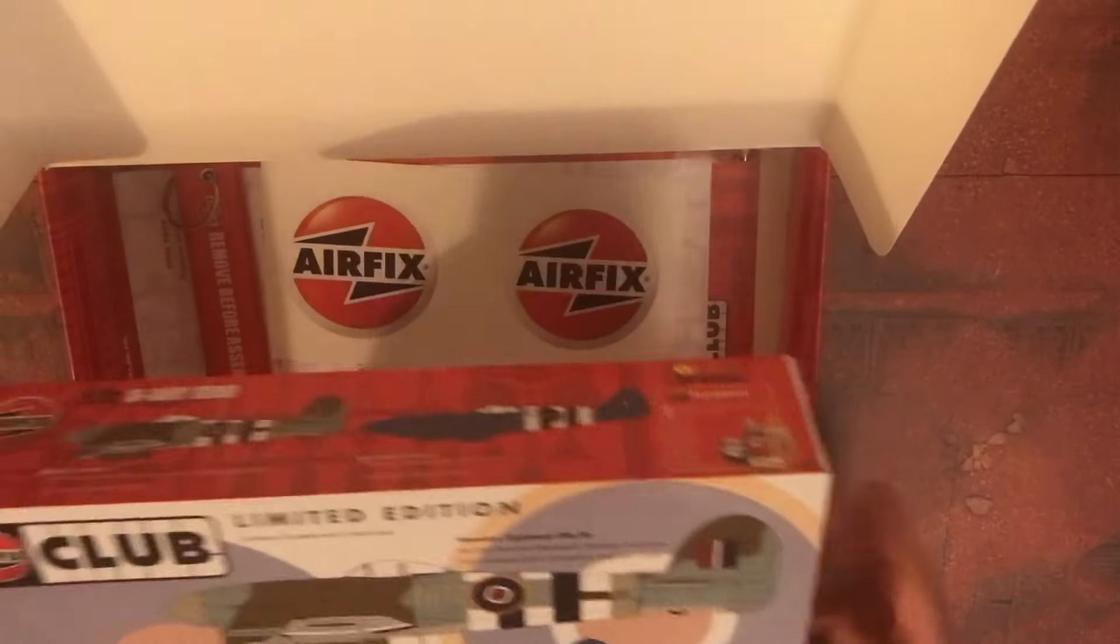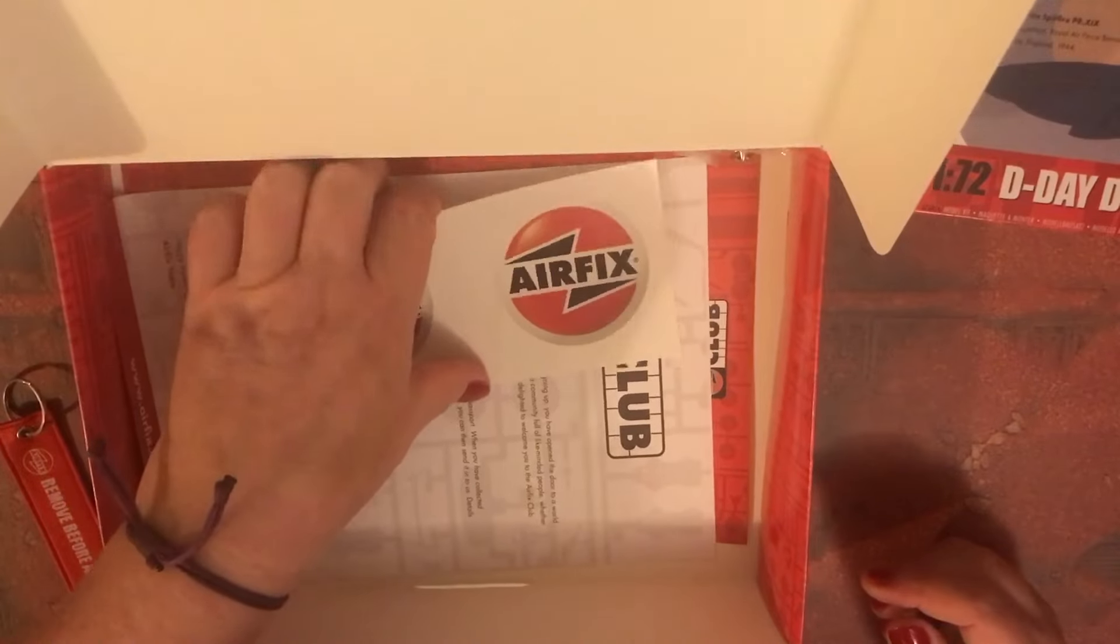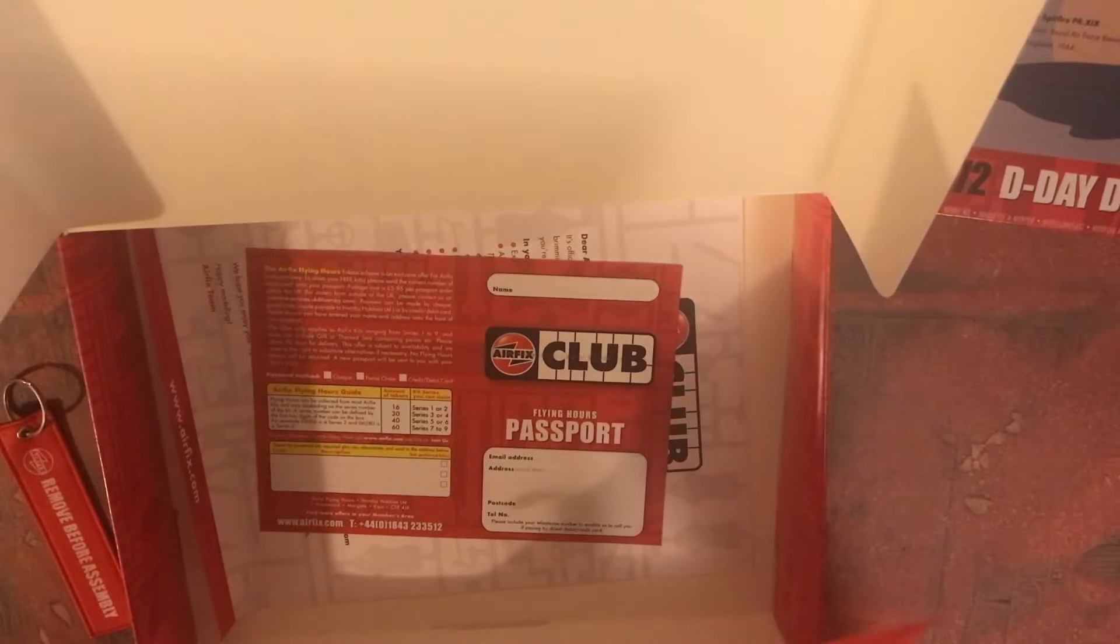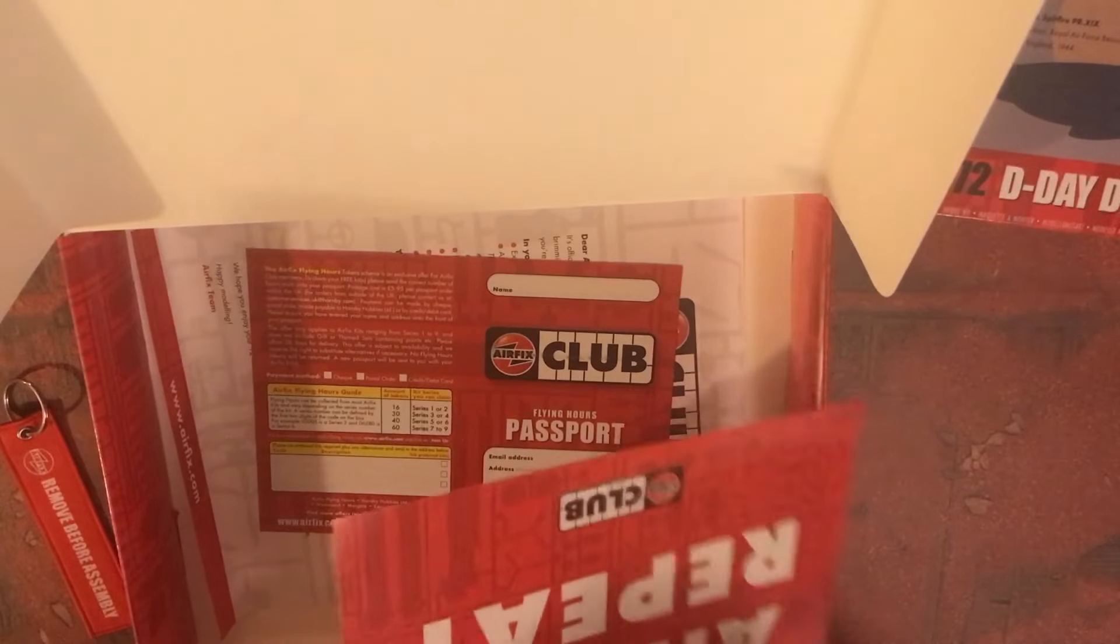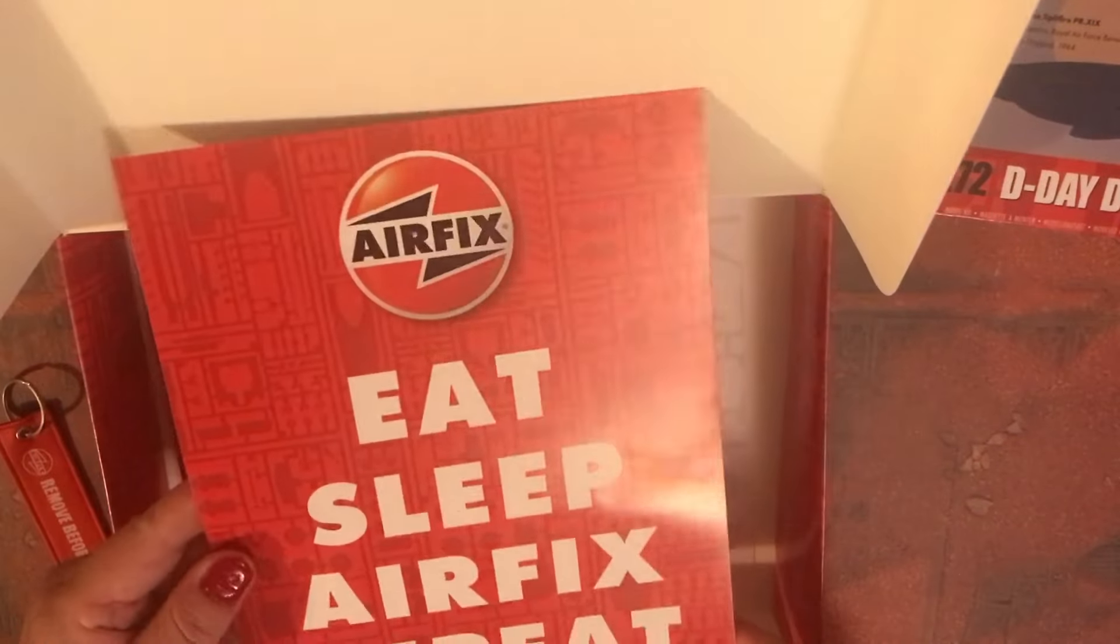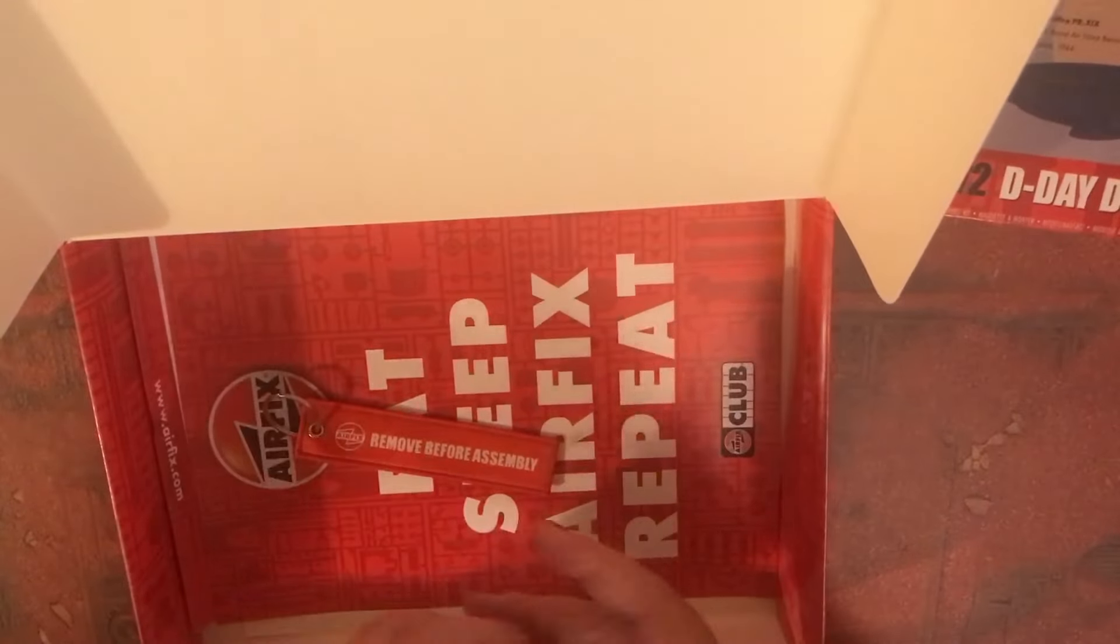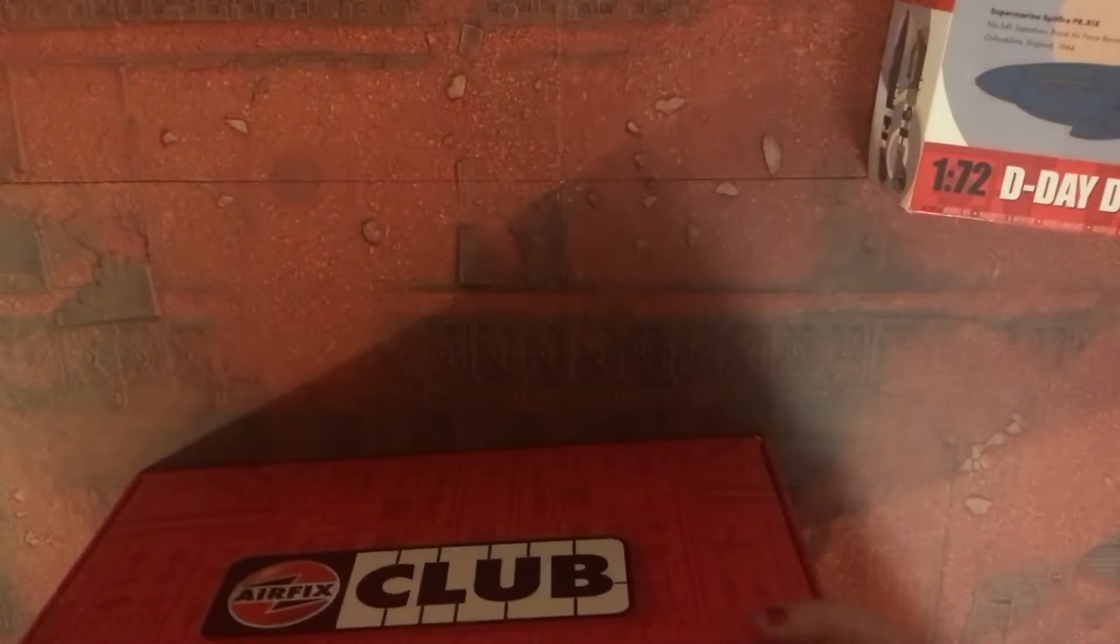On the inside you get obviously your kit for the year which is going to be the Typhoon and Spitfire, and then you get the usual contents. I've had three of these packs now. You get your welcome letter, your club passport, some Airfix stickers, an eat sleep Airfix repeat tag, remove before assembly flight tag, and your Airfix club bag. It would be nice if we got something different.